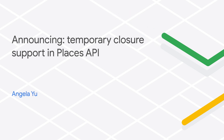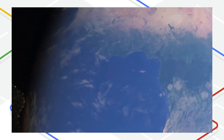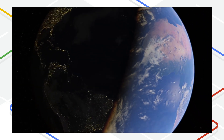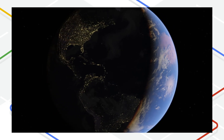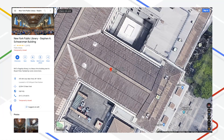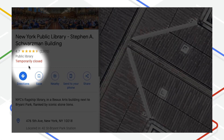The world is constantly changing, and as developers, we aim to represent the changing world accurately in digital apps. Whether it's for construction, vacation, or global pandemic, sometimes businesses and establishments have to close temporarily. We've recently enabled businesses to mark their location as temporarily closed in Google My Business, and now developers can identify those businesses through the Places API.